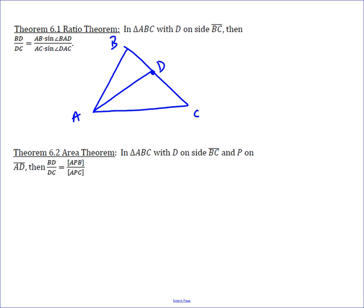We know that BD over DC equals the area of BAD over the area of DAC. And that is because BD and DC are on the same line and A is the third vertex in both of their triangles.